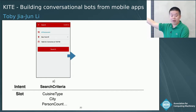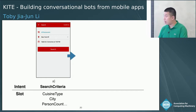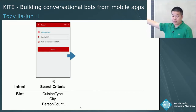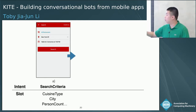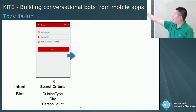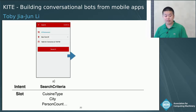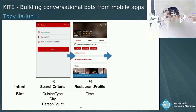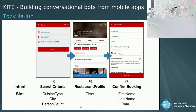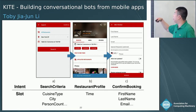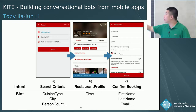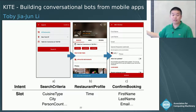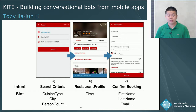Let's take the OpenTable app as an example. Looking at user interactions of making a restaurant reservation: in the first screen, the user needs to provide inputs on cuisine type, city, person count, and the time for searching for a restaurant. In the second screen, the user will need to pick a time from all the restaurant's available time slots. Finally, the user needs to provide personal information such as first name, last name, and email. From those, we can extract intents and slots from which we can build a bot.